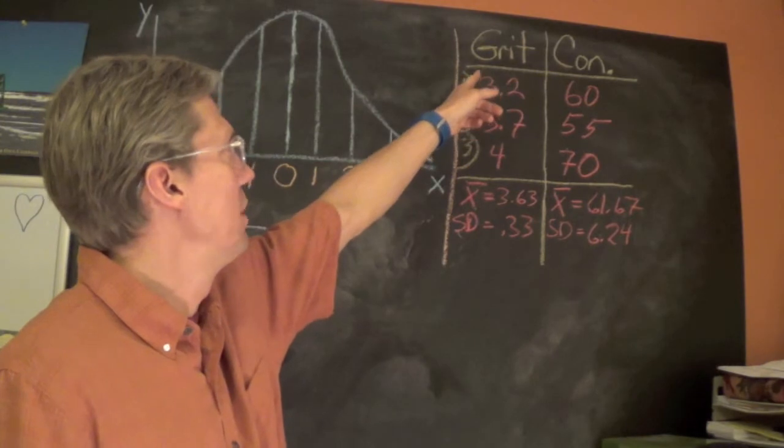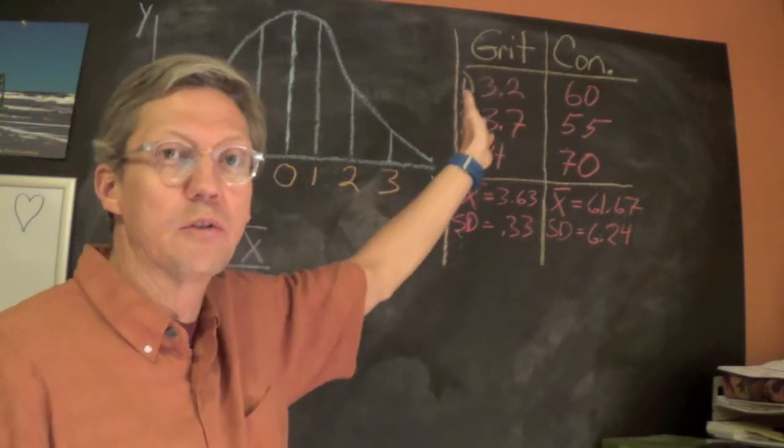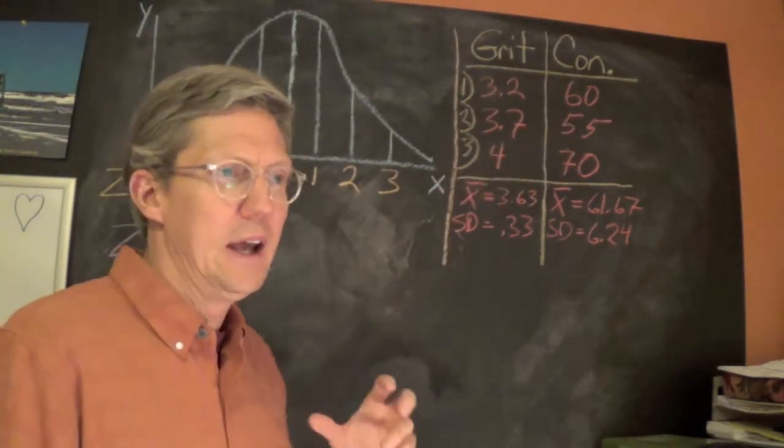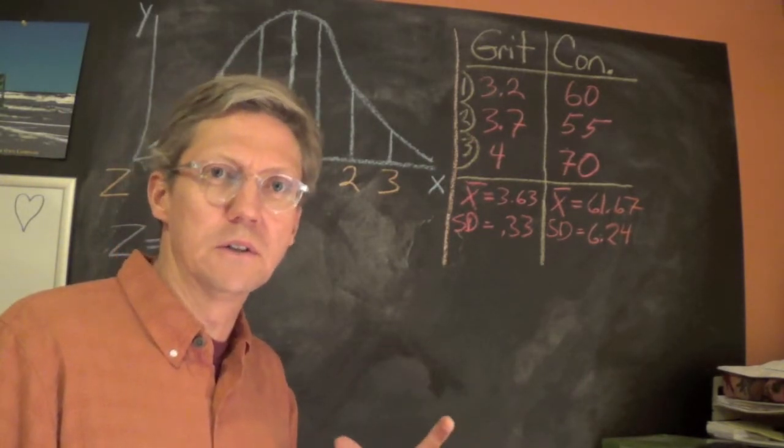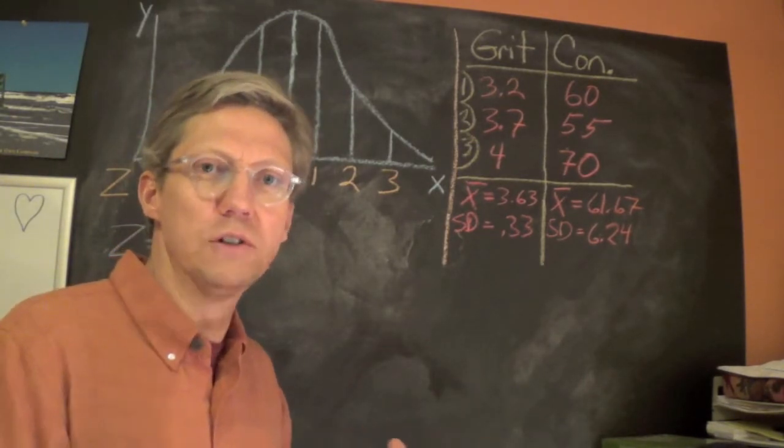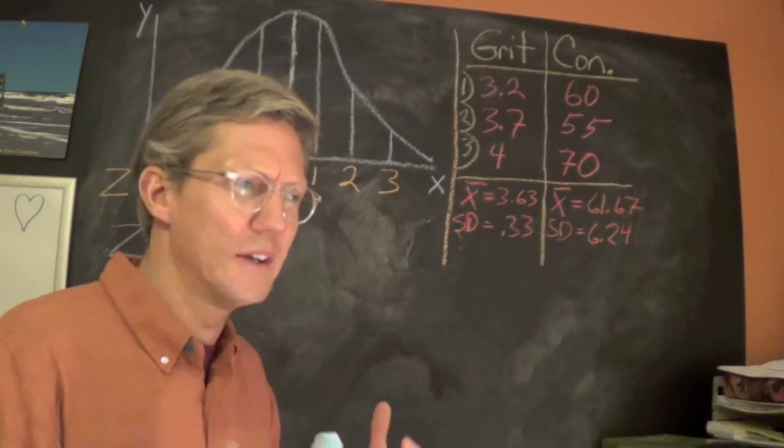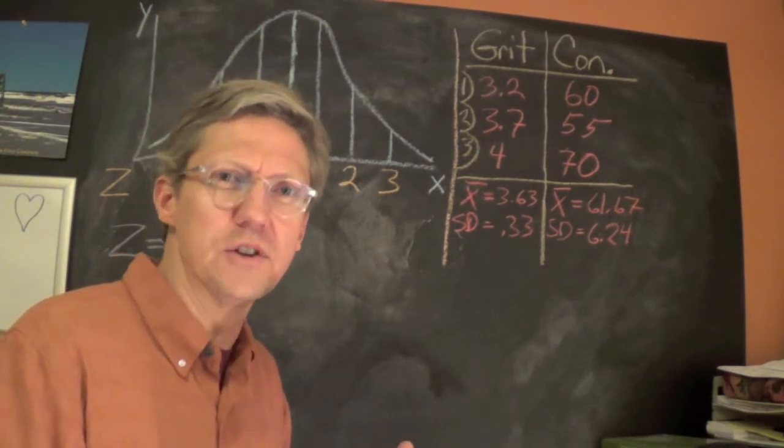I know from the literature that there is a positive correlation between grit and conscientiousness, and the reason for giving maybe two instruments to this particular student is we always want to use multiple measures when we're trying to assess to get a better picture and feel for the situation.